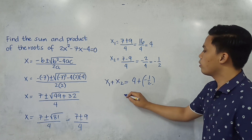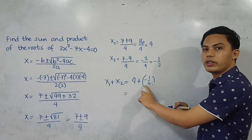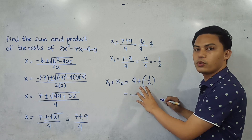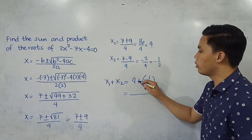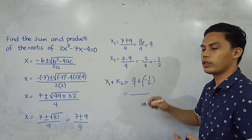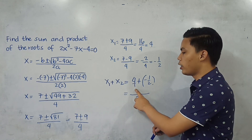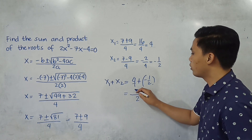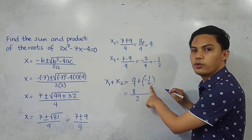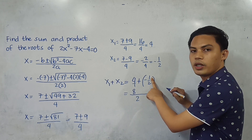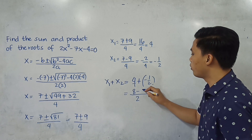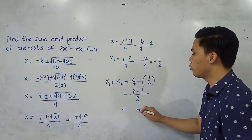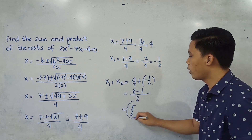Since we have a whole number and a fraction, we're going to get their LCD. The LCD would be 2, since the denominator of 4 is automatically 1. So 2 divided by 1 is 2, times 4 gives 8. Then 2 divided by 2 is 1, times 1 gives 1, so negative 1. The sum of the roots would be 7 halves.